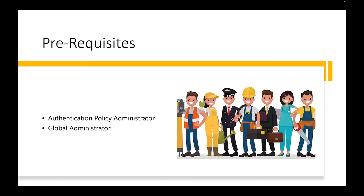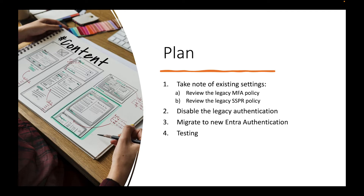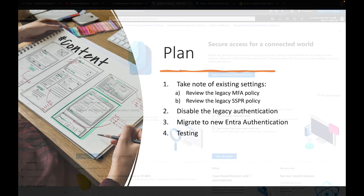I'm not going to PowerPoint you to death - I'll get straight to the point and show you how to do this legacy authentication move. As with everything in Microsoft, there are prerequisite roles you need: the authentication policy administrator role or a global admin role should suffice. Here's our plan: first, take note of existing settings by reviewing the legacy MFA policy and legacy SSPR policy. Then disable the legacy authentication, migrate to the new Entra authentication, and test everything out.